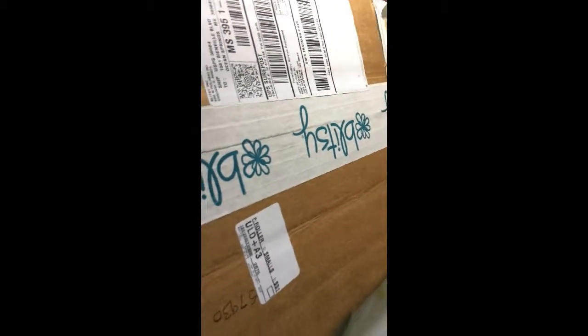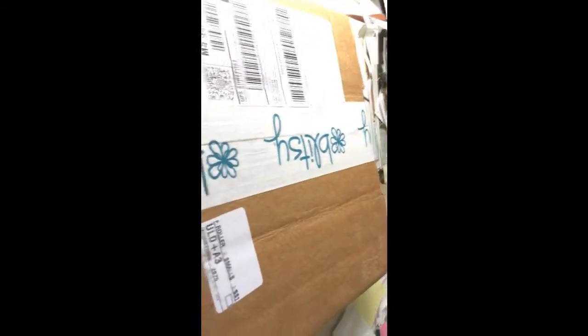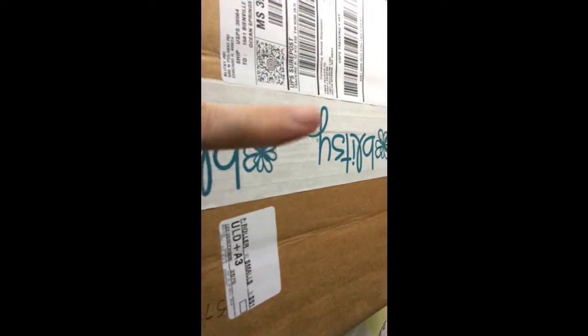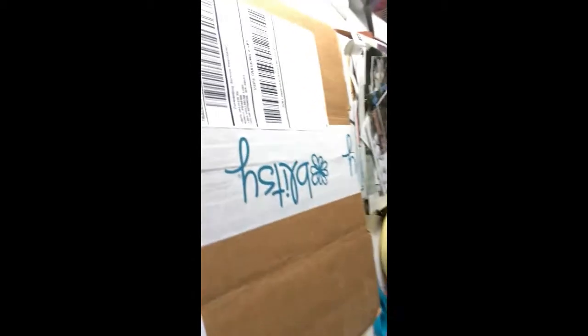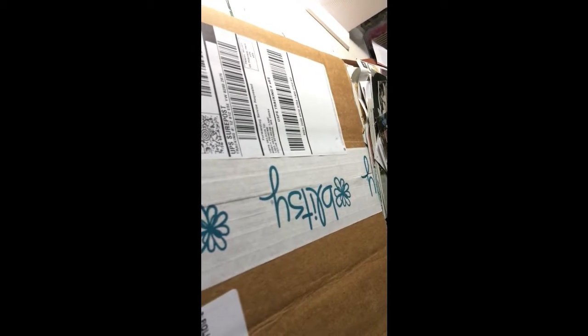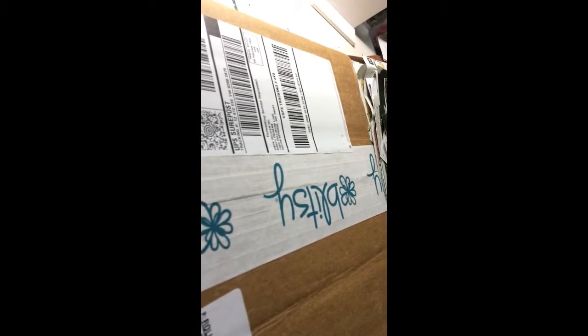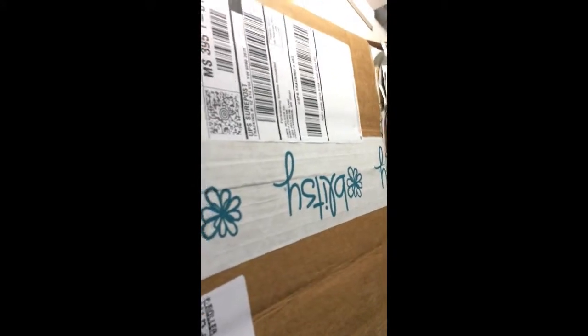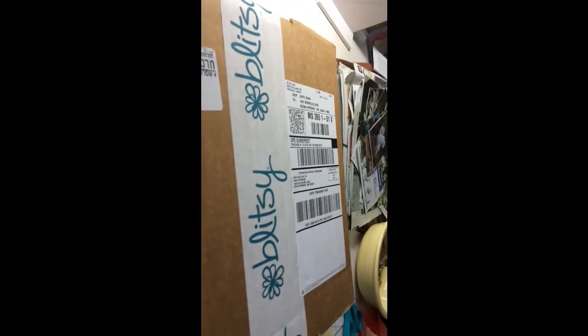I ordered this stuff. Y'all know I have a love-hate relationship with Blitzy. They have really great sales. They have really great prices on stuff. Their shipping takes forever. I bought this, and the money was taken out of my account on April the 20th. And today is like the 16th of May. So I mean, that's kind of a long time. But anyway. Okay, I'm going to pause this and open the box so you don't have to listen to me do that. And I'll be right back.